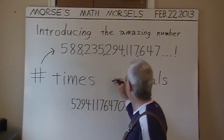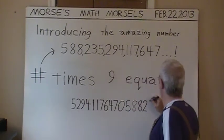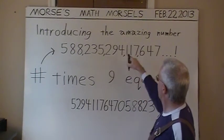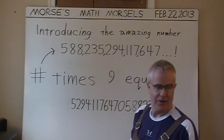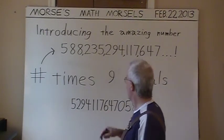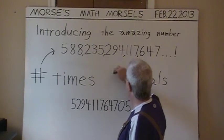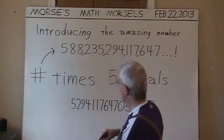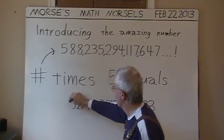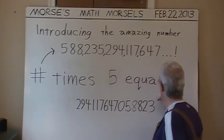Multiply by 9: this number times 9 is this number. To multiply by 5, let's put a 5 in here, rub out the 5 from the left side, and it goes to the right.